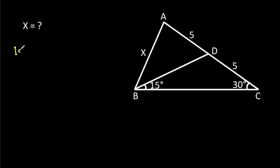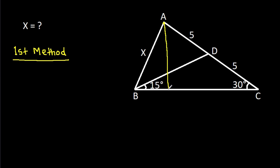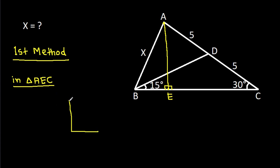The first method: from point A, if we draw A perpendicular on BC, suppose this point is E, then in triangle AEC, angle AEC is 90 degrees.